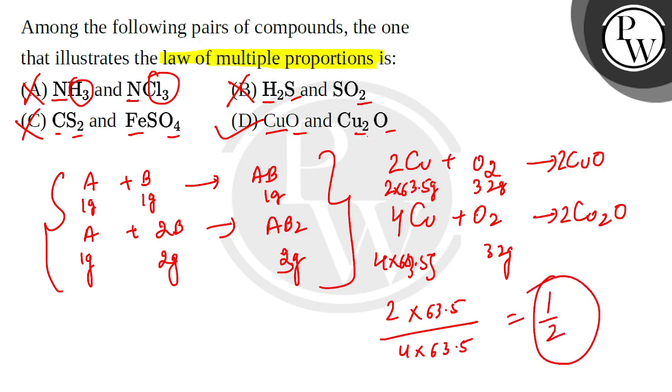So these are the two compounds, CuO and Cu2O. The combination of copper and oxygen is in this way. The one element, the mass ratio is in the simplest whole number ratio. So law of multiple proportion is valid. D option is correct. Rest are incorrect. I hope you understood. Thank you.